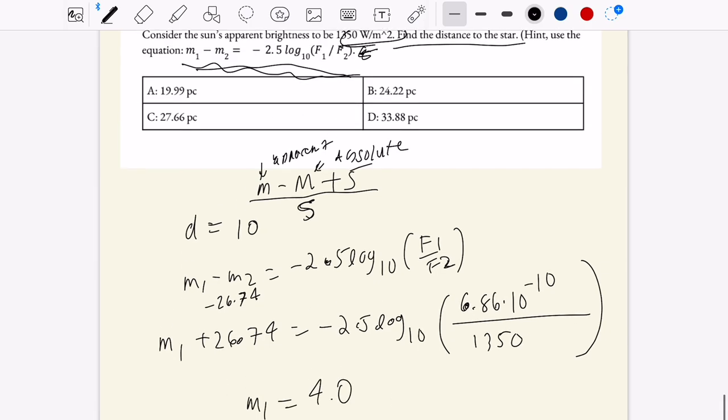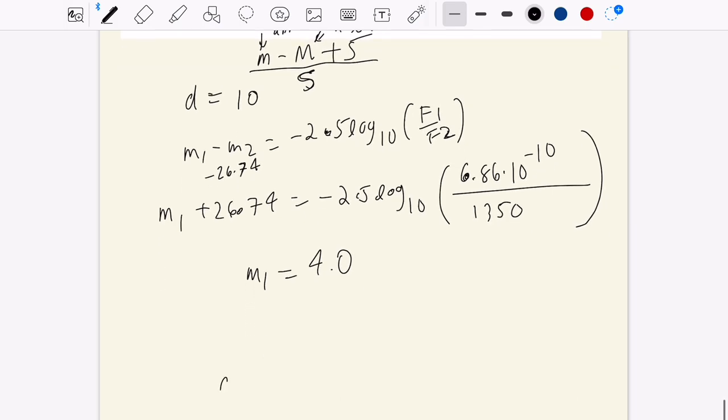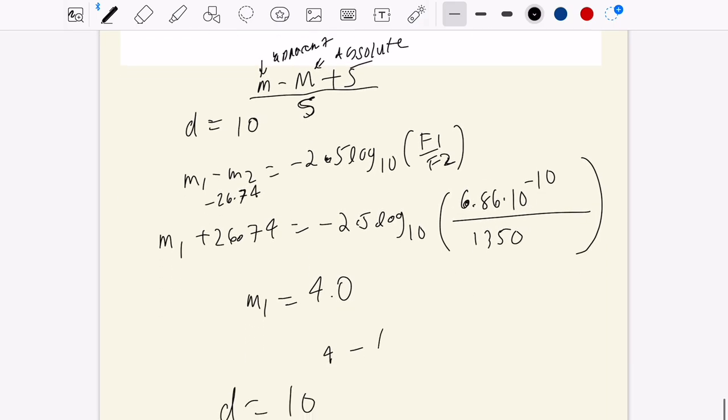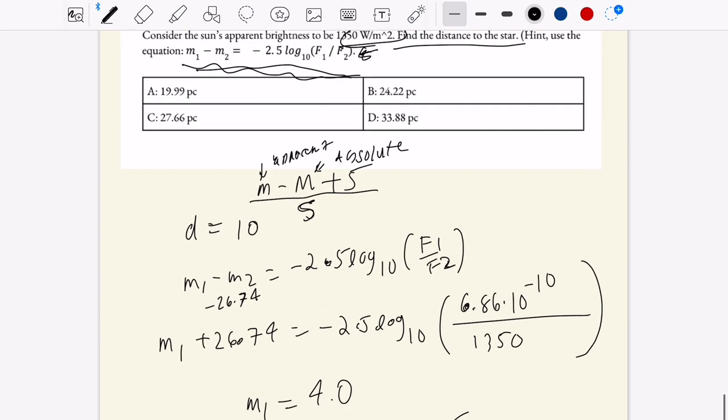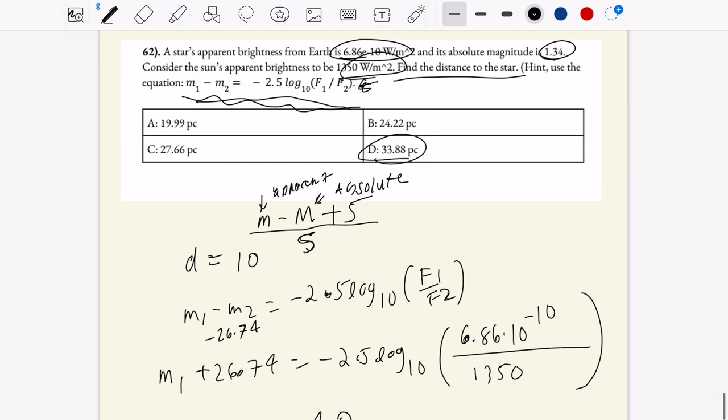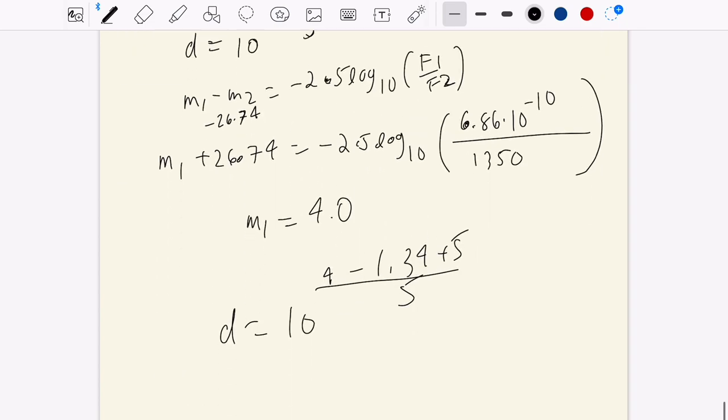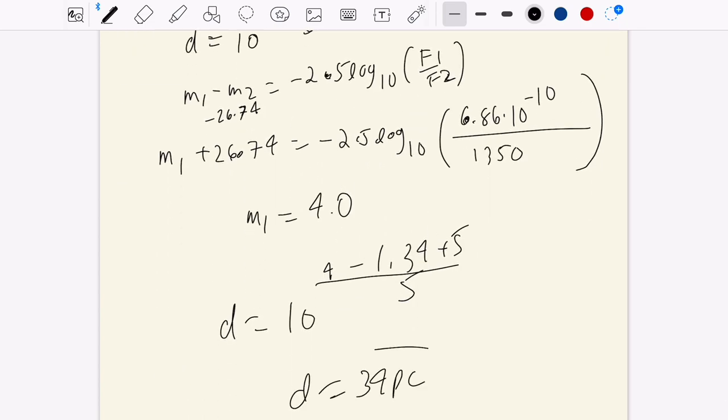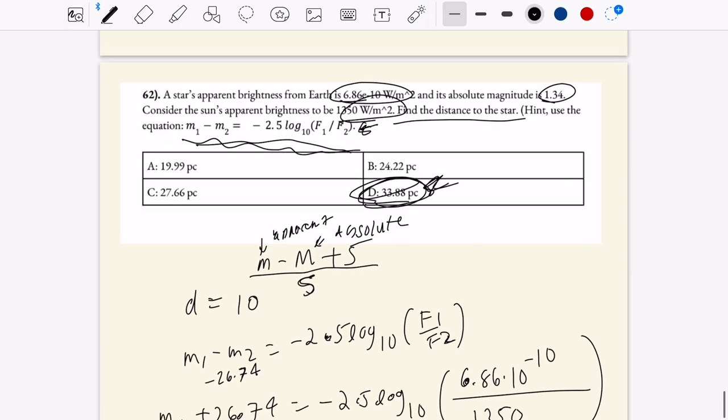And so if m1 is equal to 4.0, we can plug it back in here. So then d is equal to 10, 4 minus 1.34 plus 5 divided by 5. So let's do that real quick. 4 minus 1.34 plus 5 divided by 5. 10 to that value. And if you do that, you should get around 34 parsecs. I had a quick calculator error, but d here is equal to 34 pc. We're pretty far off from the other answer choices, so you know that's the correct answer.